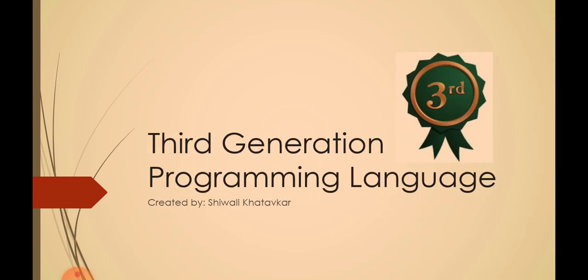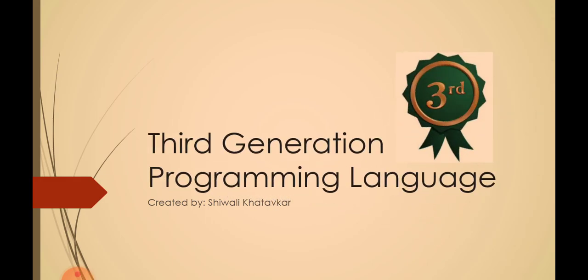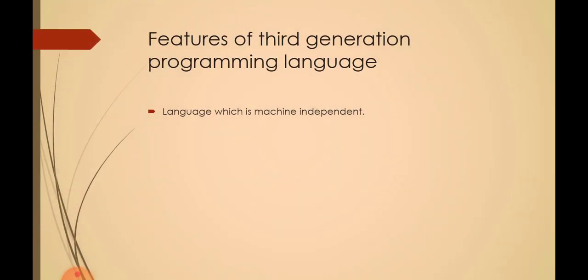The third generation programming language was first introduced in the late 1950s. There was a purpose behind introducing it: the first generation programming language is tough to learn and execute, and similarly the second generation language, that is assembly language, is also very hard to learn and hard to assemble or create programs.